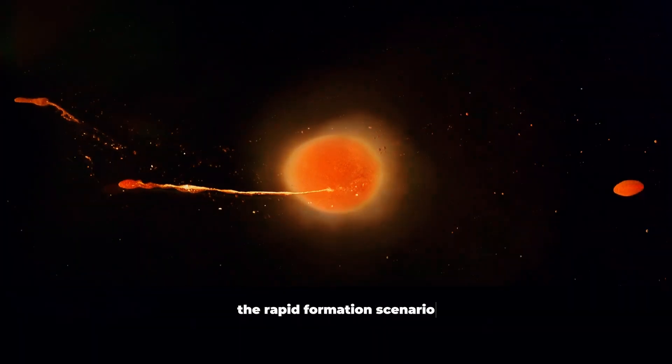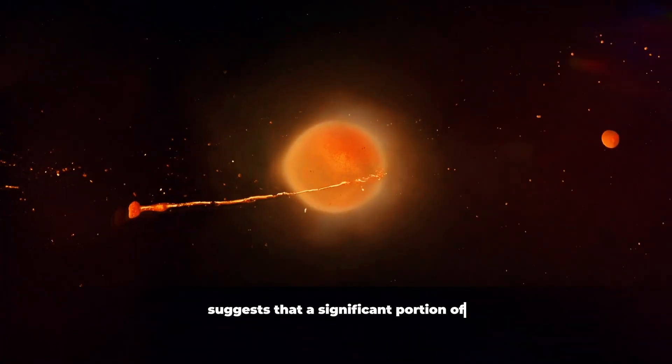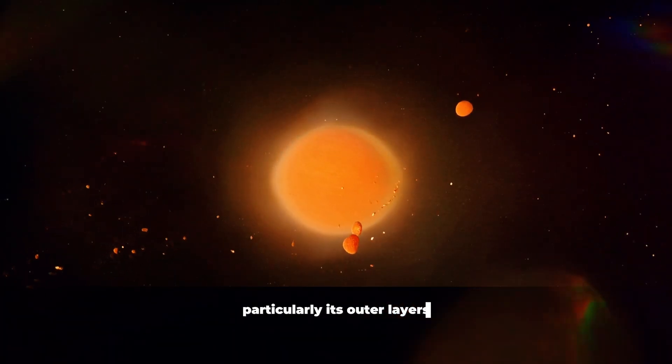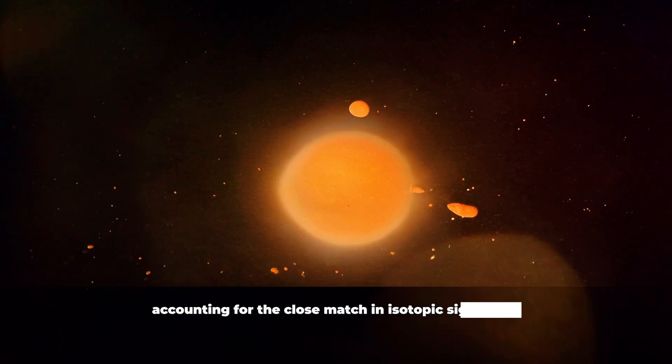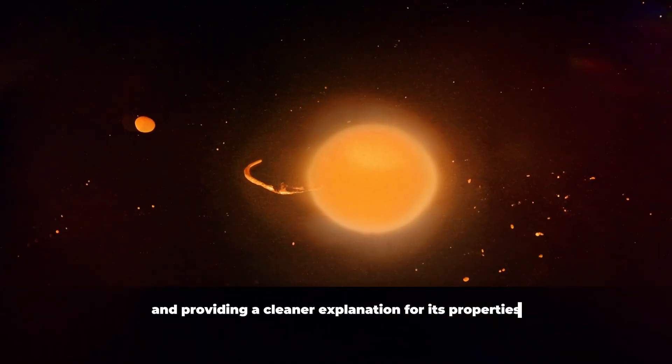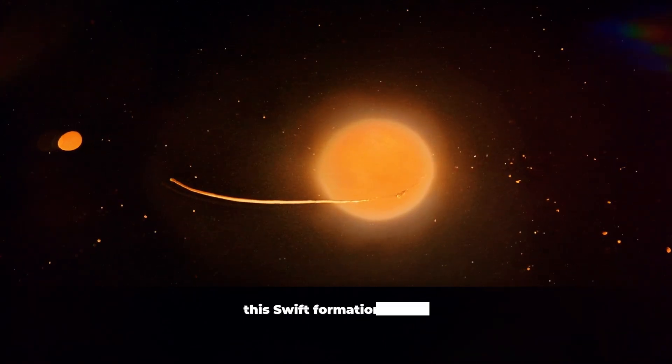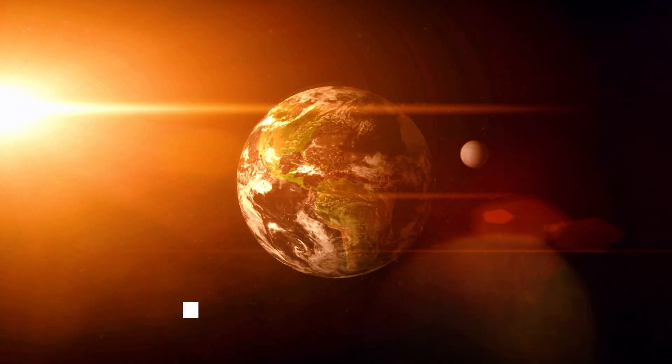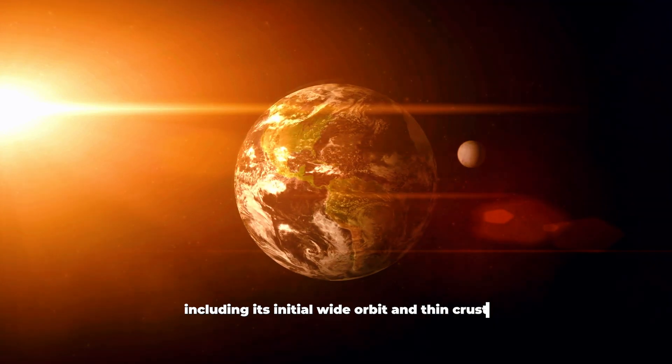The rapid formation scenario suggests that a significant portion of the Moon's material came from Earth, particularly its outer layers, accounting for the close match in isotopic signatures and providing a cleaner explanation for its properties. This swift formation model simplifies many of the Moon's characteristics, including its initial wide orbit and thin crust.